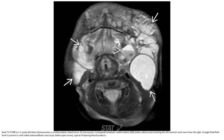This is the axial T2 fat-saturated image, which demonstrates a multiloculated mixed macro- and microcystic lymphatic malformation involving the left neck more than the right. A single fluid-fluid level is present within a left-sided macrocyst, with layering blood products.